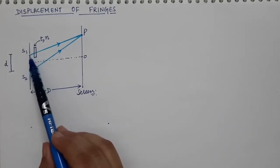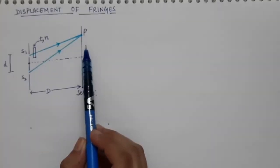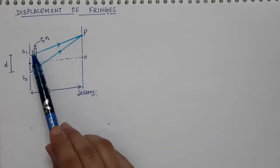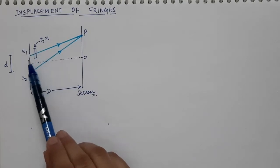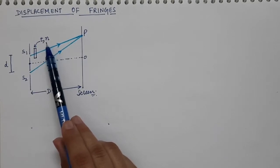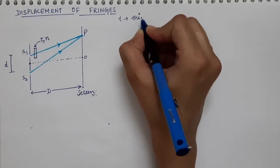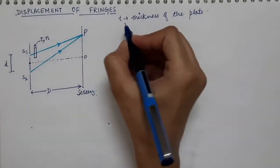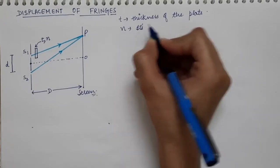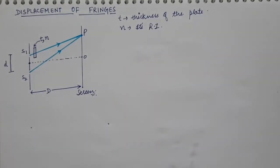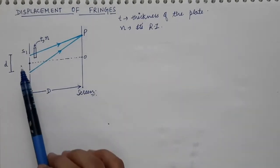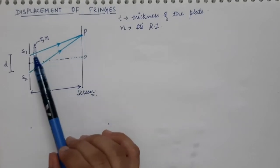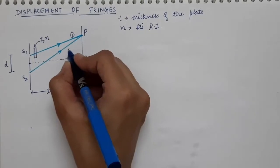The light coming from S1 will have to pass through this sheet and then fall on the screen, whereas the light coming from S2 will fall on the screen directly. From the diagram we can clearly see that the light from S1 has to pass through this particular plate of thickness t and refractive index n, and then it falls on capital P. This is the first light ray, and that is the second light ray.